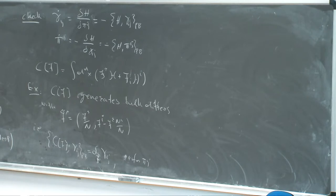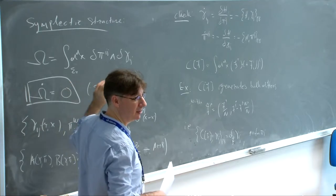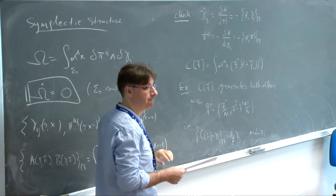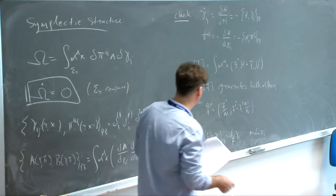There is a difference between Dirac brackets and these Poisson brackets because we are dealing with a constrained system. Here it is not Dirac brackets — it's just the Poisson bracket. I will probably mention Dirac brackets a bit later.